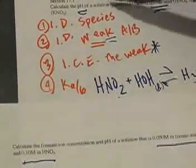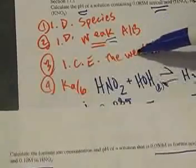Now pause the video and try this practice problem using our four steps: find the formate ion concentration of a solution that is 0.05 M in formic acid and 0.1 M in HNO3. Identify the species, identify the weak thing, ice the weak thing, and then use the Ka or Kb. Look at what Ka value is given — that tells you which species is weak.